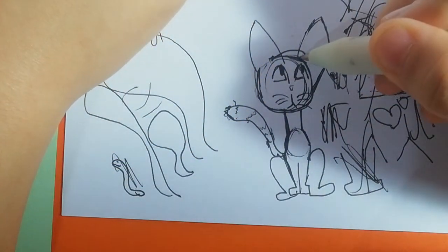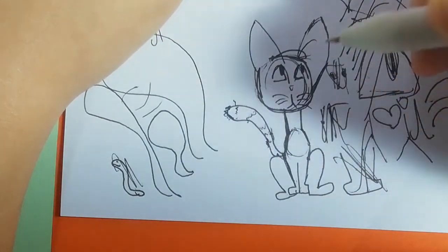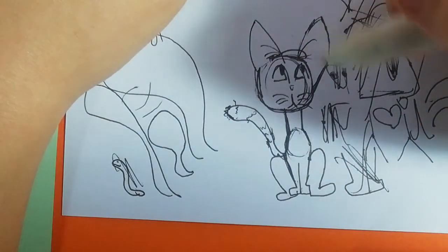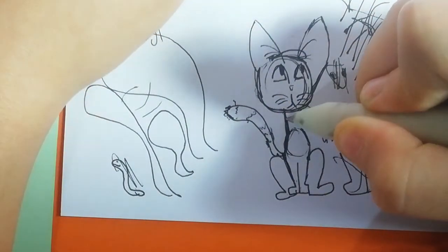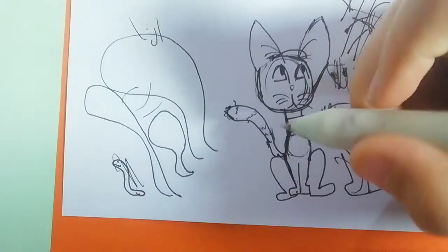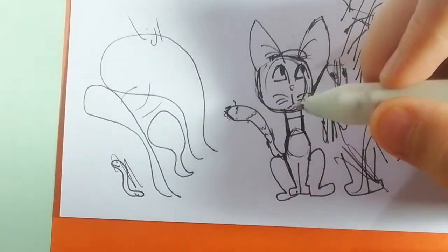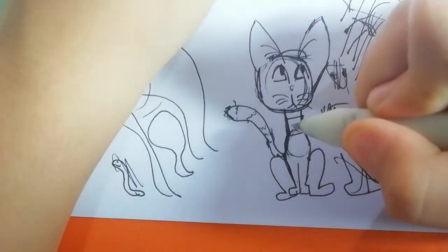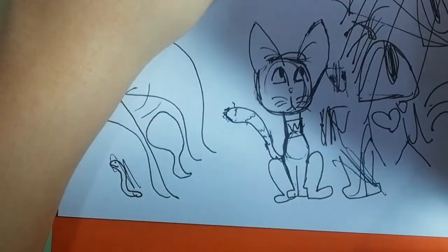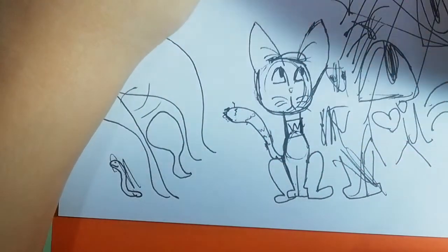But to finish it off, you're just gonna go like that to make like little fur in the ears. You can make it like a little collar in the old Egyptian colors, and you can make like little designs on them.